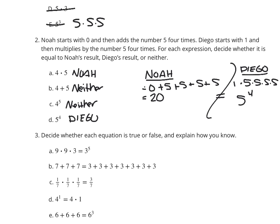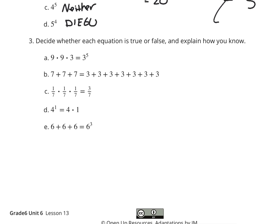Question 3: decide whether each equation is true or false and explain how you know. Part A: 9 times 9 times 3 equals 3 to the 5th power. If I break the first 9 into 3 times 3, the second 9 into another 3 times 3, and then we have the remaining 3, that gives us 3 times 3 times 3 times 3 times 3, which is 3 to the 5th. So Part A is true — there are five 3s being multiplied.